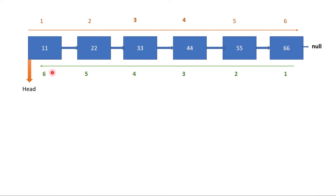I have defined a linked list here and it has almost six nodes: 11, 22, 33, 44, 55, and 66. I have marked their index positions — this is the first element, second, third, fourth, fifth, and sixth. This is the start of the linked list or the head node, and this is the last node. From behind, this is the first node, then second, third, fourth, fifth, and sixth node from behind.